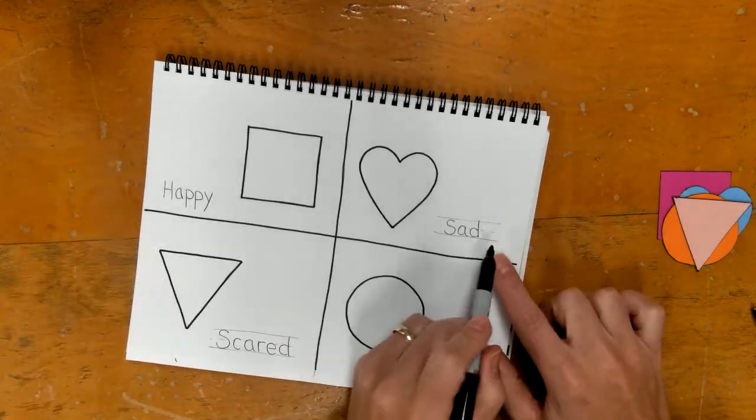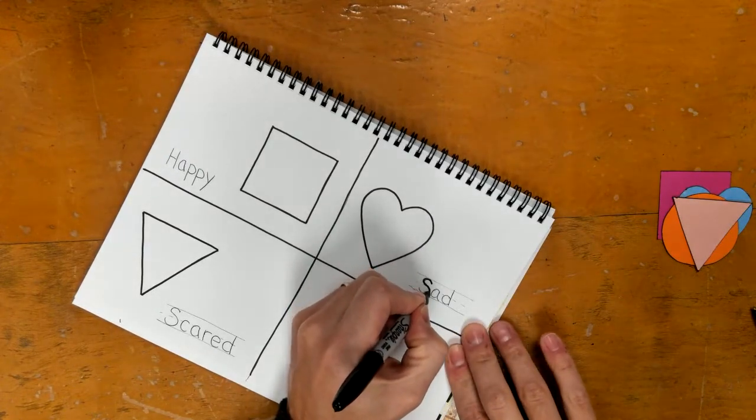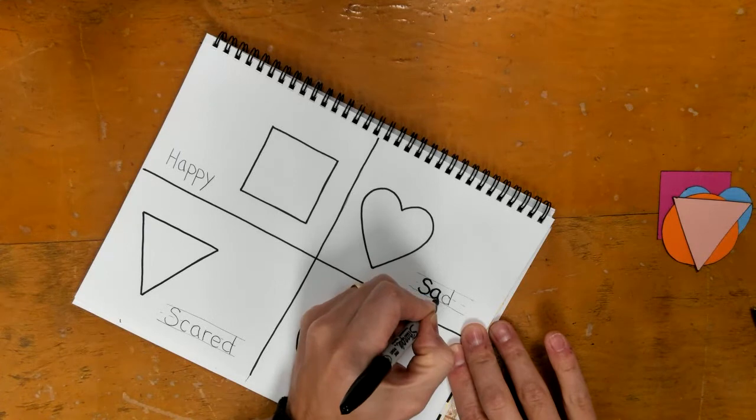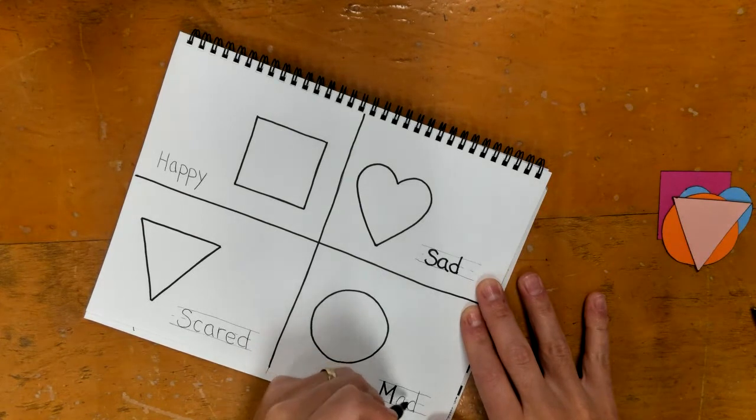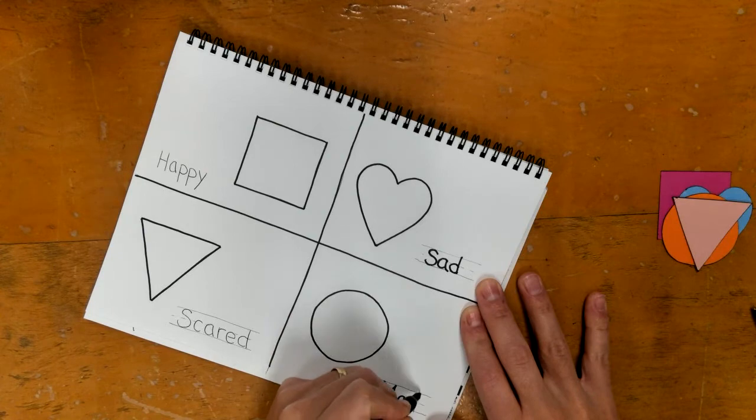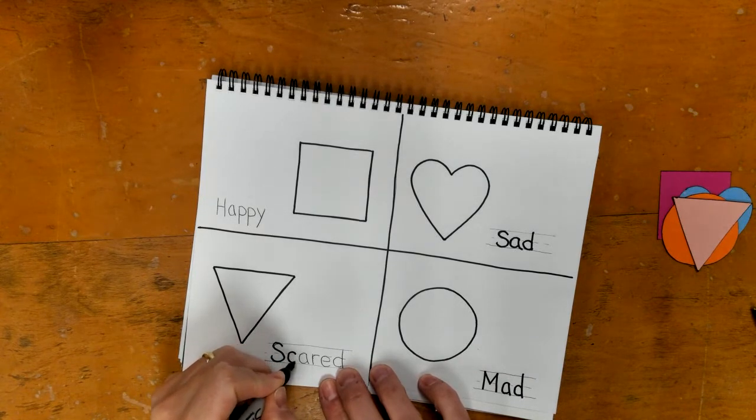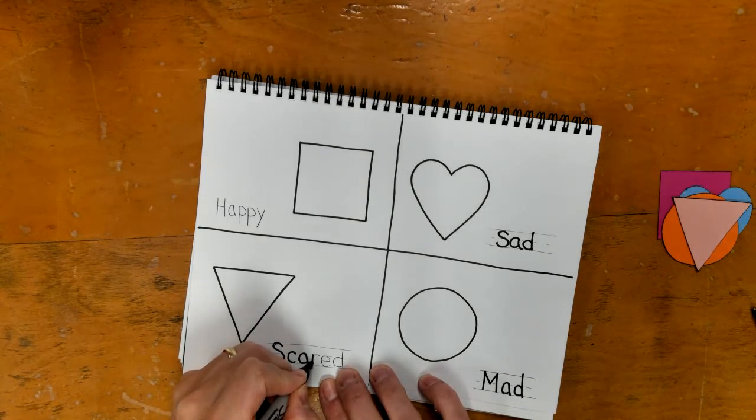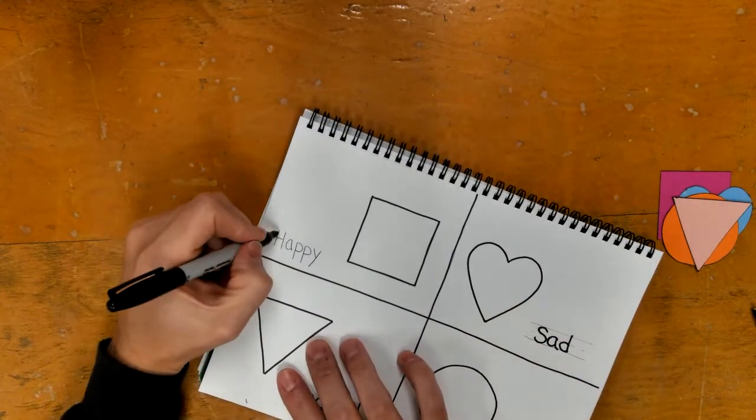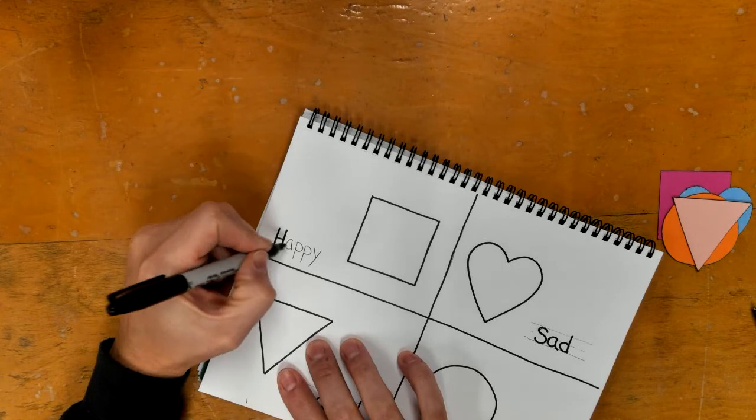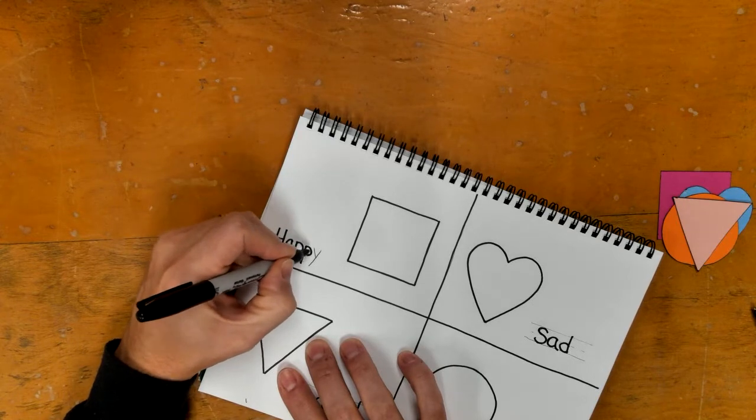And then when you do the words, don't do the lines that you added. If you added them, some of you didn't add them, so that's fine. I just want you to do the words. So sad. Mad. Scared. And the last one, happy.